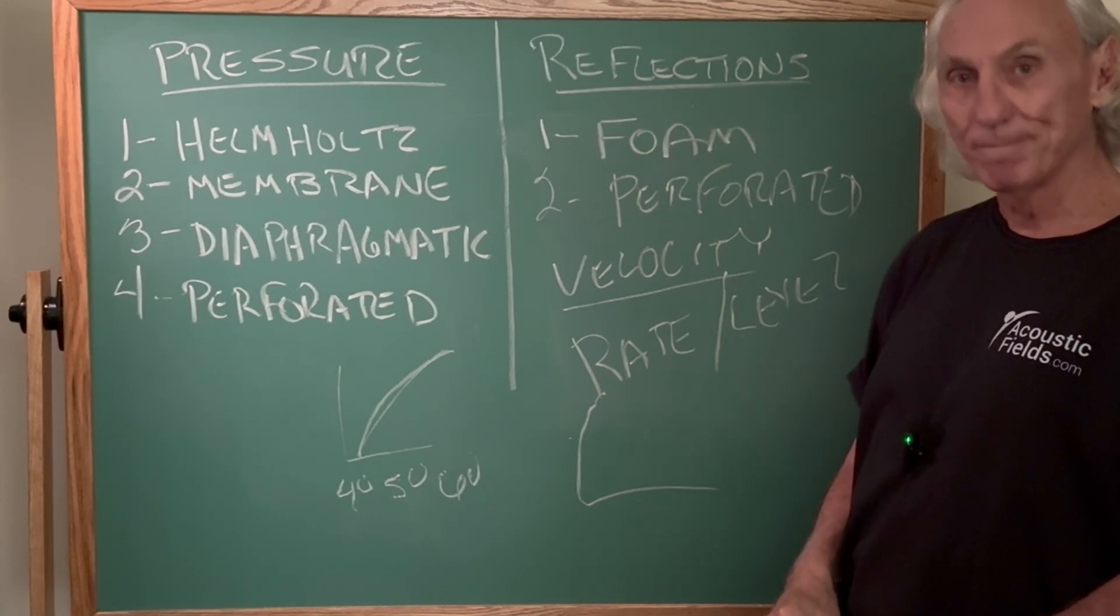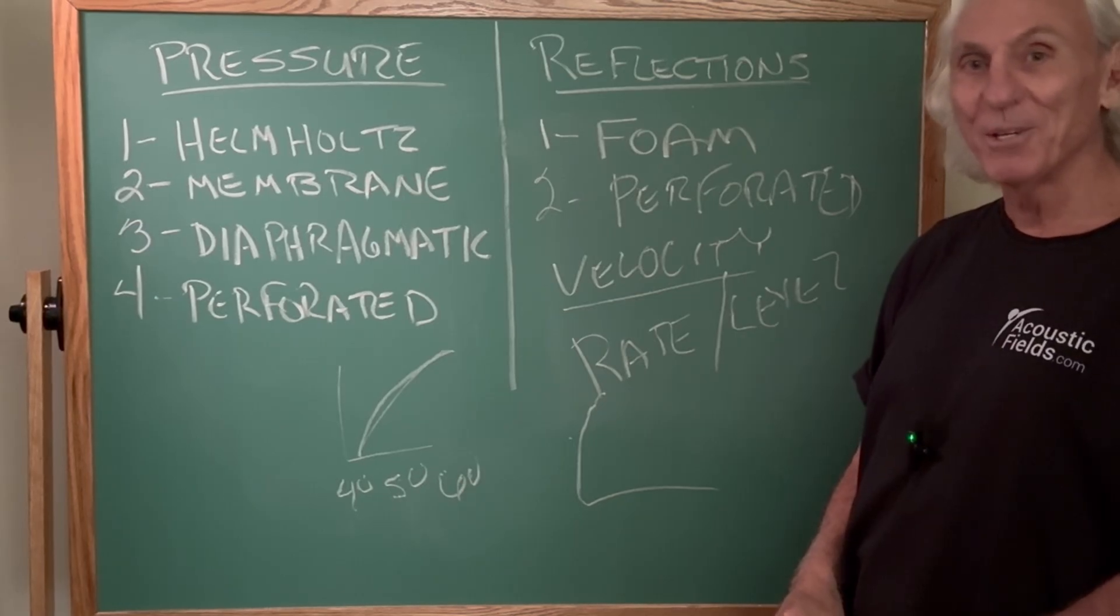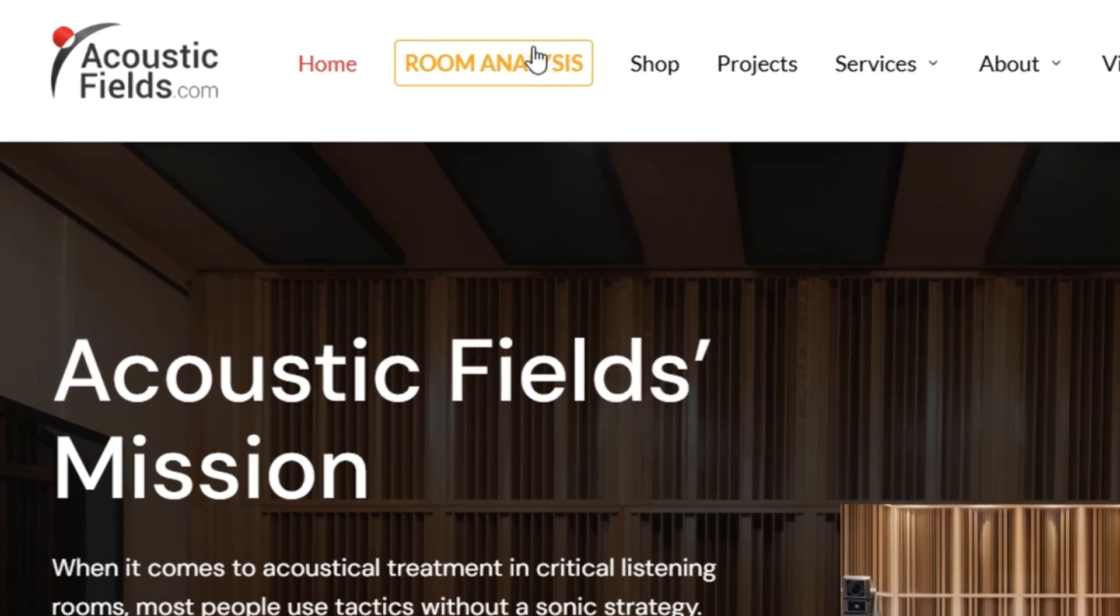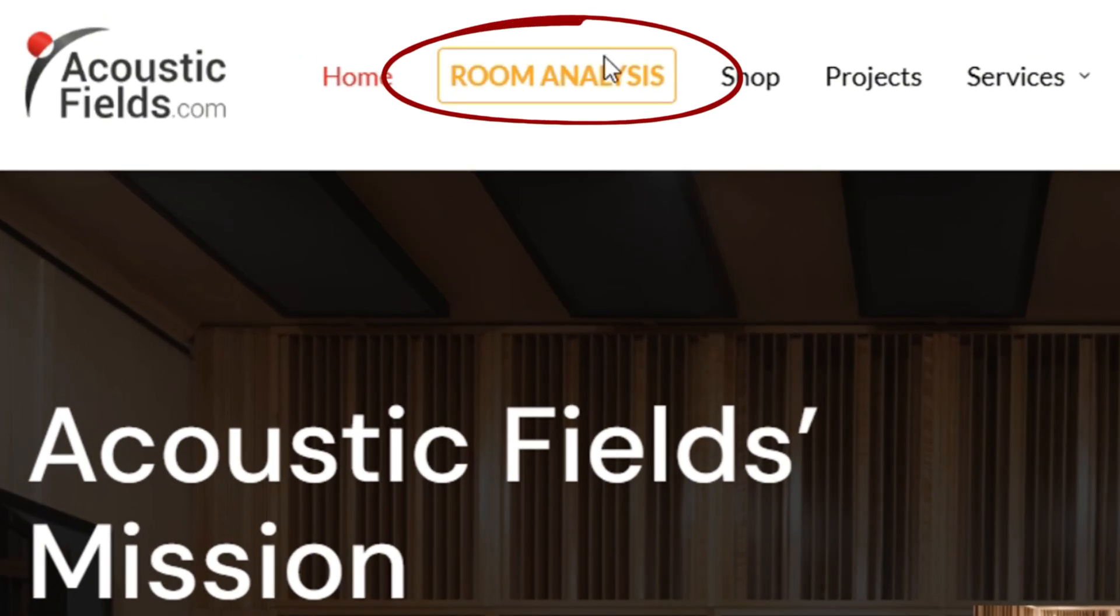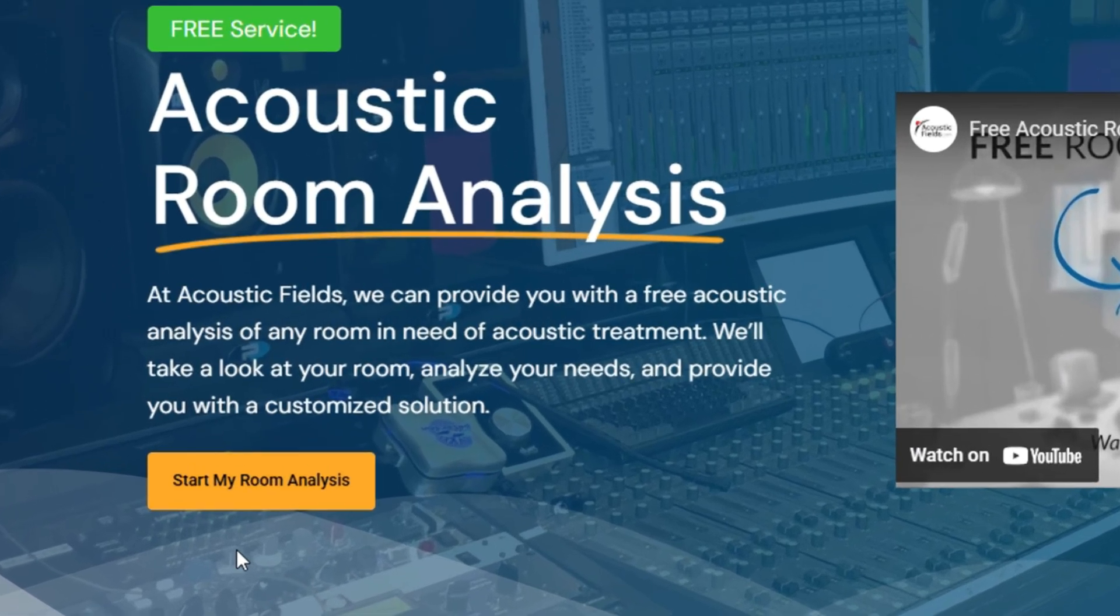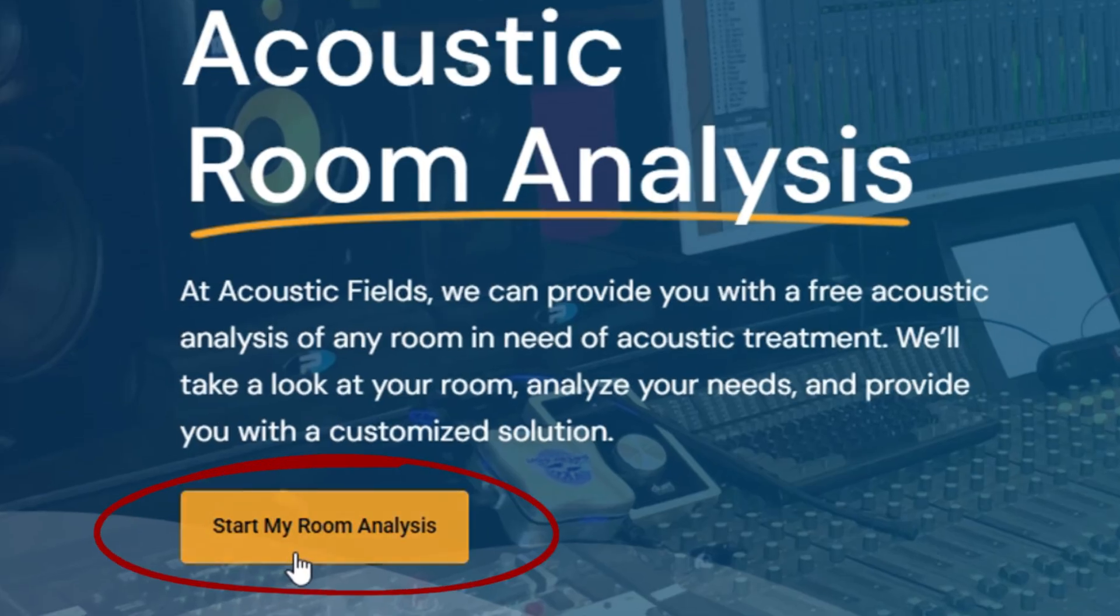Hi everyone, Dennis again. I want to walk you through the room form process. So go to the home page and click on the room analysis tab. Once you get to the room analysis tab, then it's going to ask you for information. So left side, start my room analysis, orange button, click on that. And once we get to that it's going to ask you just six or eight things: dimensions, structure composition, things like that.